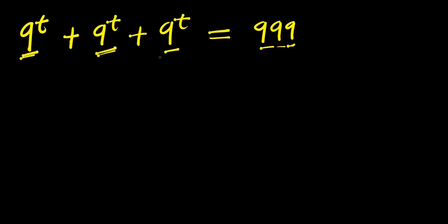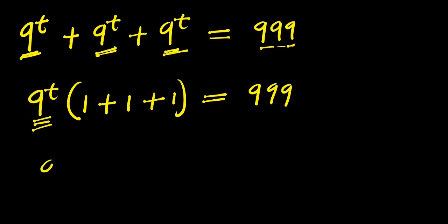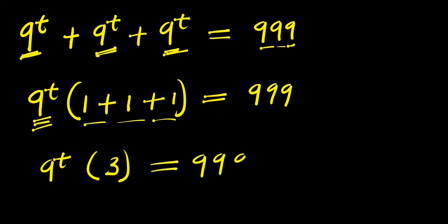We have 9^t times (9^t / 9^t + 9^t / 9^t + 9^t / 9^t), which is 1 + 1 + 1 = 3. So we have 9^t times 3, and this equals 999.